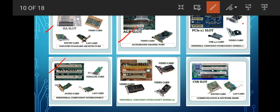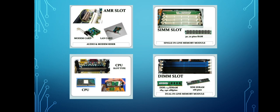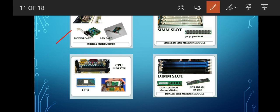Always remember to check that your card can be installed in the slot — there are slots with different pin configurations, so check that the pins match. Next is your CNR slot — Communication Network Riser — used for sound card and LAN card. After that is your AMR slot — Audio Modem Riser — used to connect a modem card or LAN card.